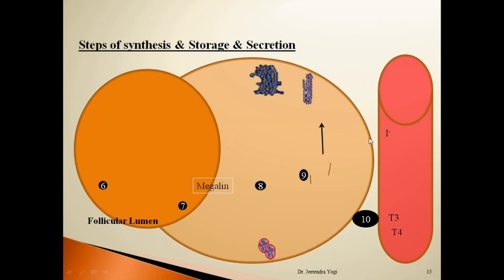The first step is called iodine trapping. In this step, iodide molecules from the plasma enter into the thyroid follicular cell via the basal membrane of the thyroid follicular cell. This iodide entry depends on the sodium-iodide symporter, or sodium-iodide co-transporter system. This iodide entry is against the electrochemical gradient because the thyroid iodide to plasma iodide ratio is normally 30:1.